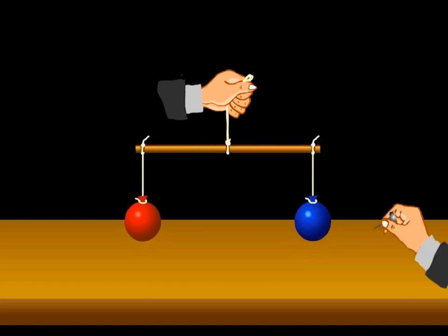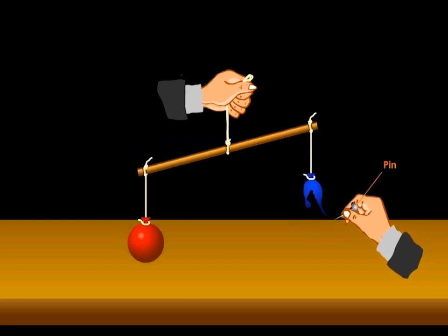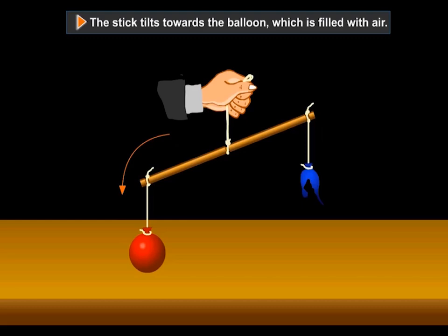Make a hole in one of the balloons using a pin to allow the air to escape slowly. Now what do you observe? The stick tilts towards the balloon which is filled with air.